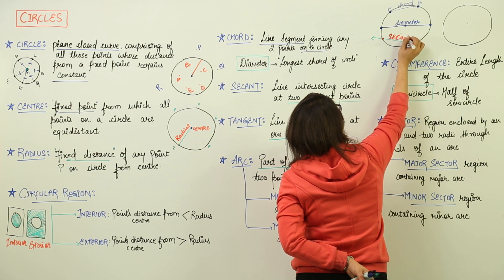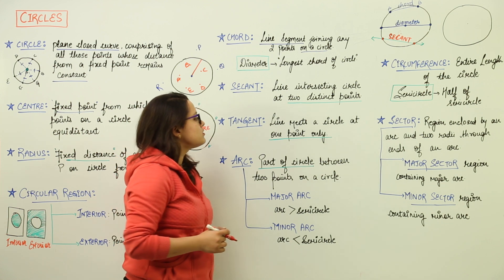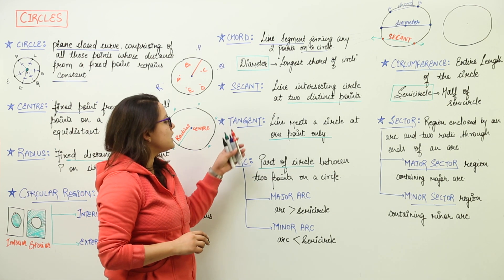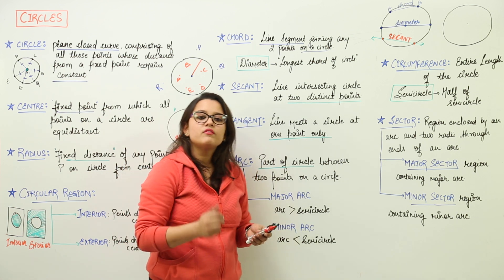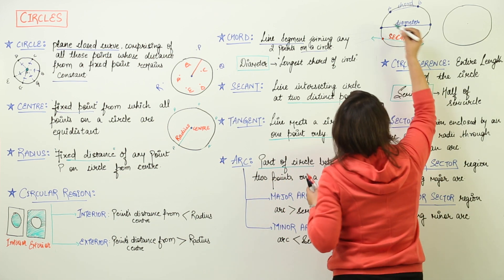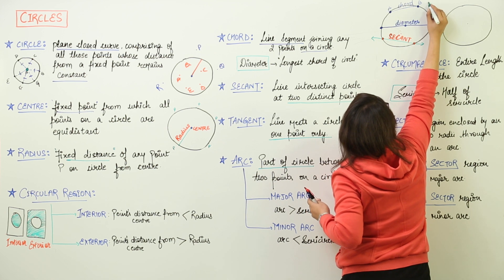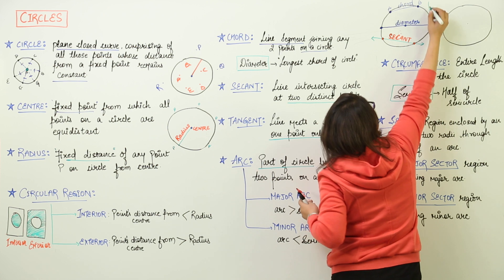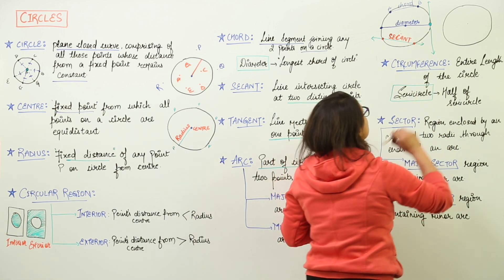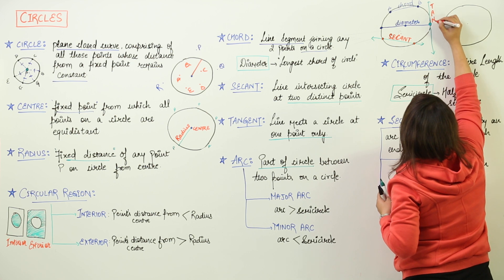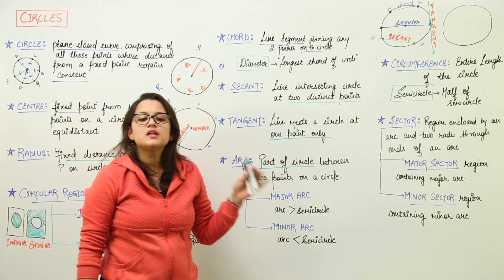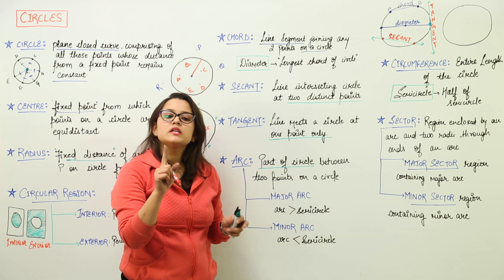Next is the tangent. Tangent is also a line which meets a circle at one point only. The difference between secant and tangent is that secant meets the circle at two points whereas the tangent meets the circle at one point only. We can make a tangent here going like this. This is the tangent passing through the circle, meeting the circle only at one point. So that is the tangent — a line that passes through the circle touching at only one point.